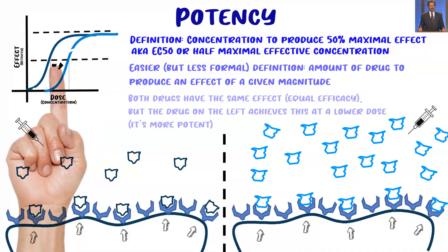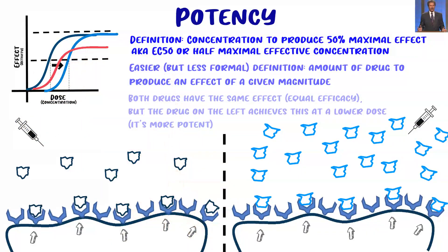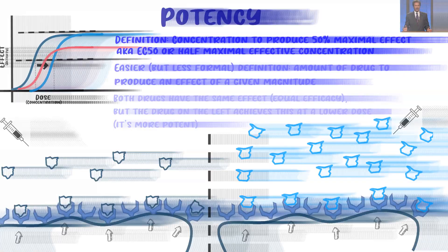To emphasize the difference between potency and efficacy, let's add a high potency partial agonist onto the dose-response curve. We can see that the efficacy of this partial agonist is lower than the two full agonist drugs, but its effects occur at a lower dose than the drug on the right — that's why it's a higher potency drug and its curve is shifted to the left. To summarize: potency is the amount of drug required to produce a given effect. If less concentration is required, it's a more potent drug, and this says nothing about the efficacy of the drug.